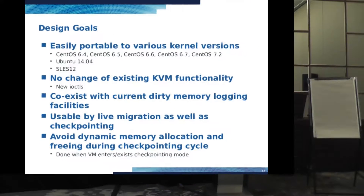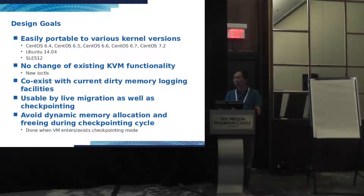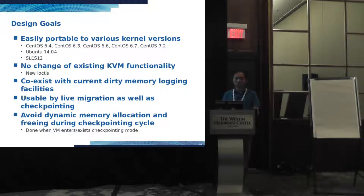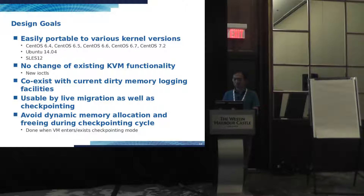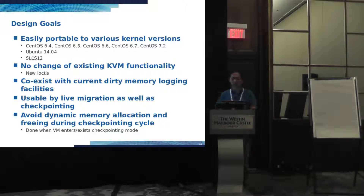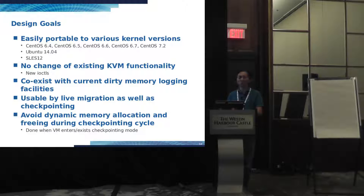For the proposed changes, we want them to be easily portable to different kernel versions — so far we have ported to various versions of CentOS, Ubuntu, and SUSE. We don't want to change any existing KVM functionalities, so we use new IOCTLs for communication between user space and KVM. We also want it to coexist with the current dirty memory logging facilities and be usable by live migration. Another goal is to avoid dynamic memory allocations and freeing during a checkpointing cycle because those operations are unpredictable — we only want to do that when we enter or exit checkpointing mode.